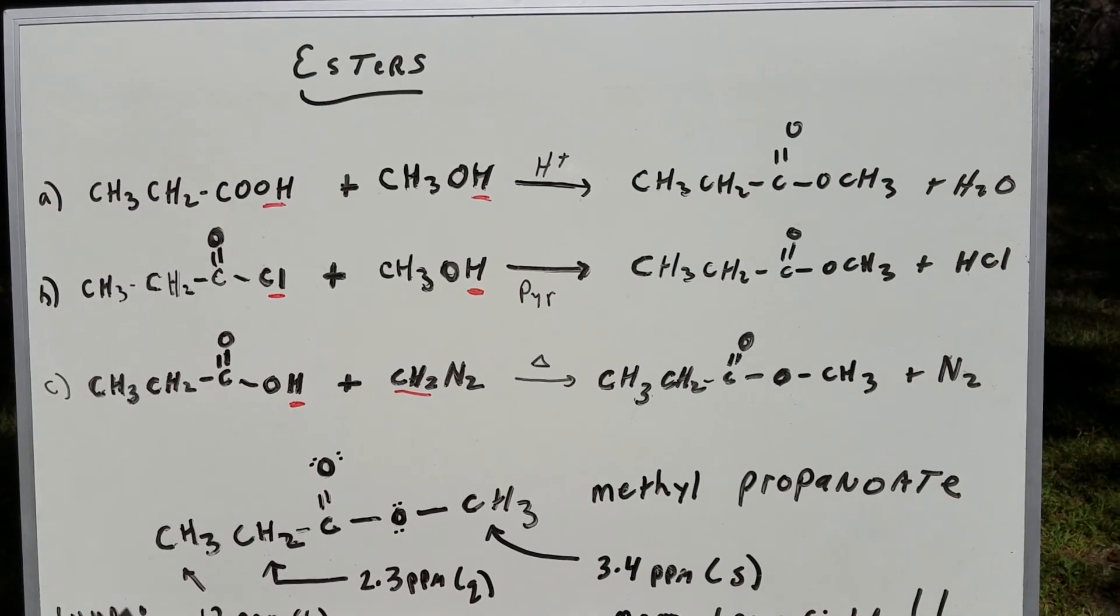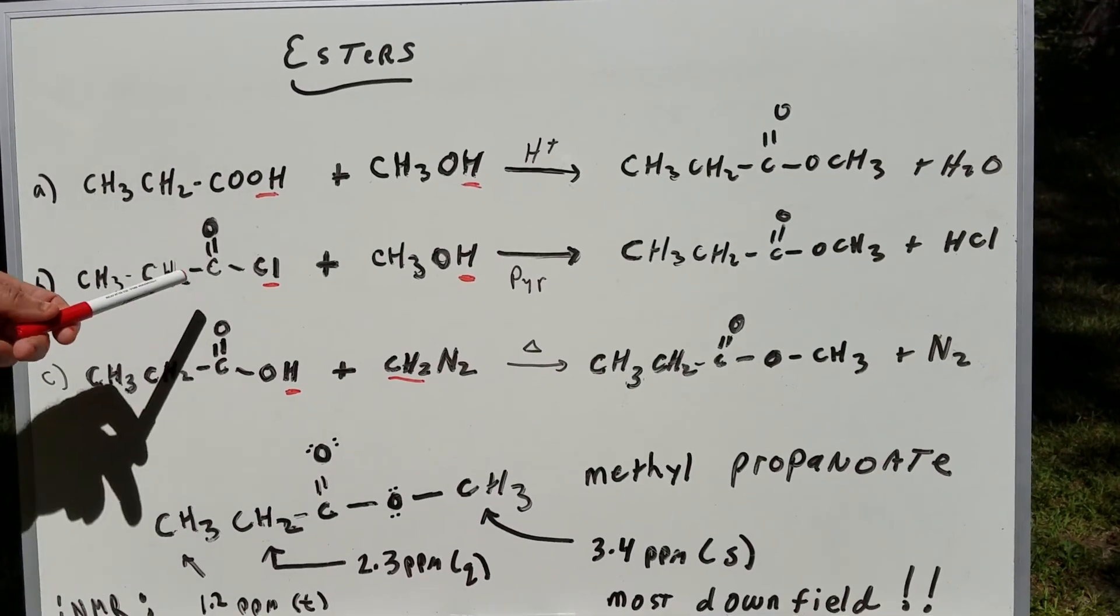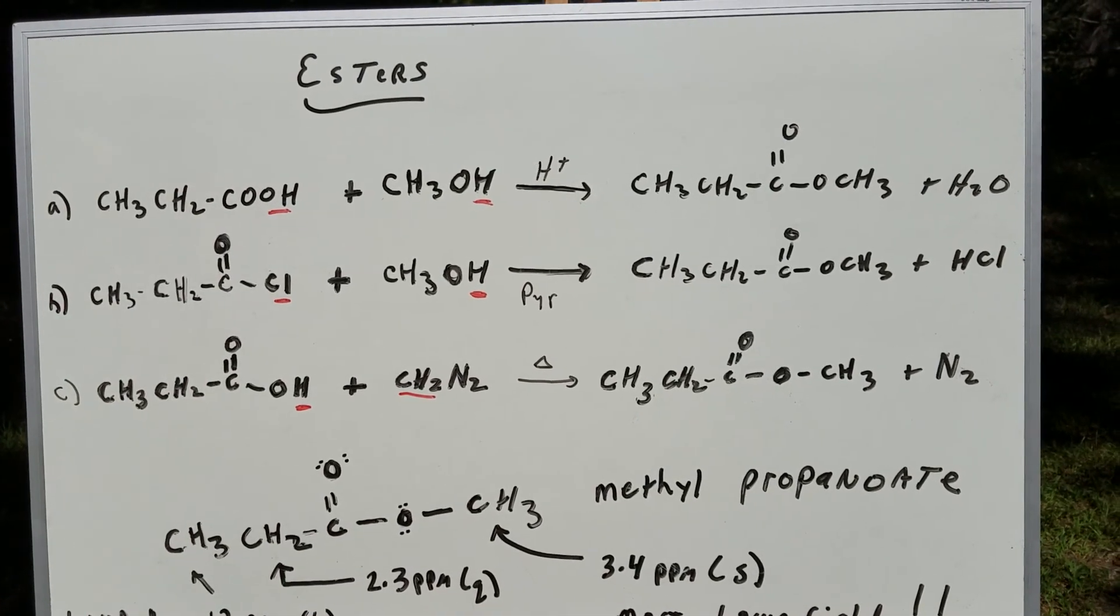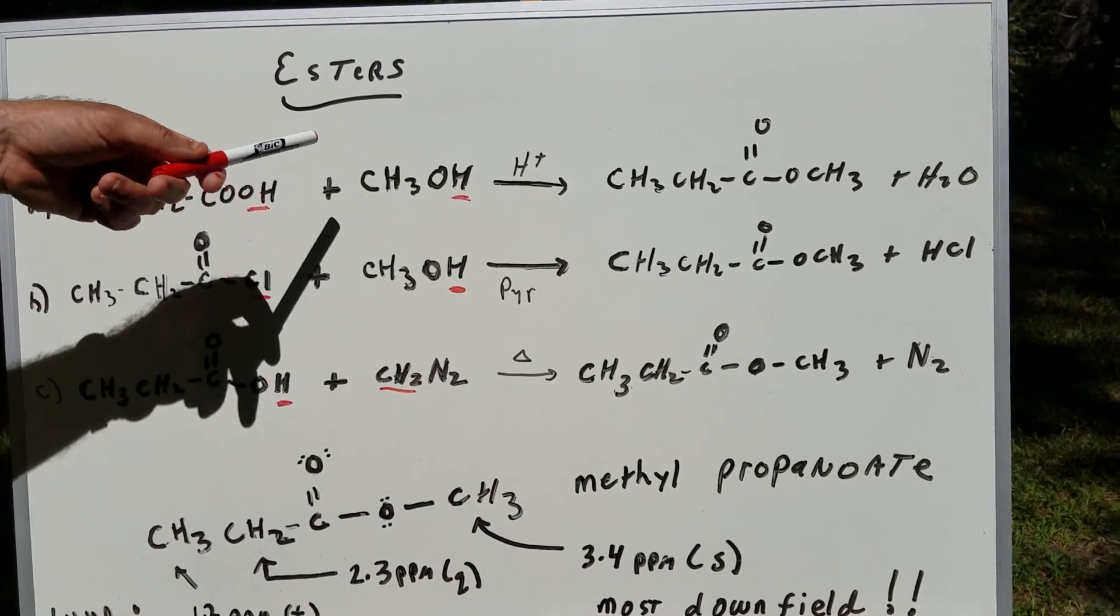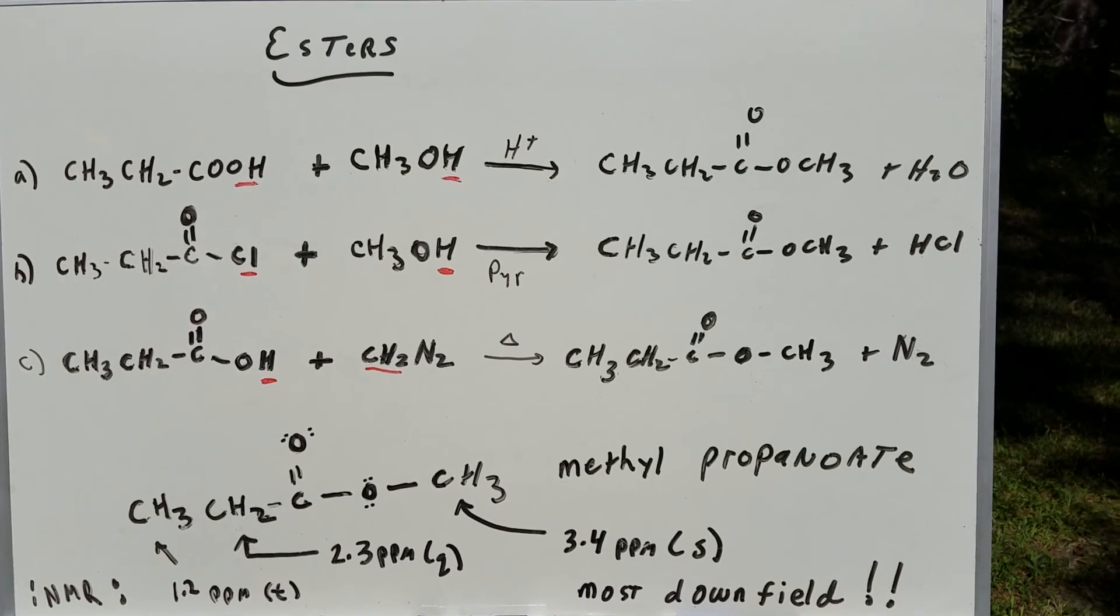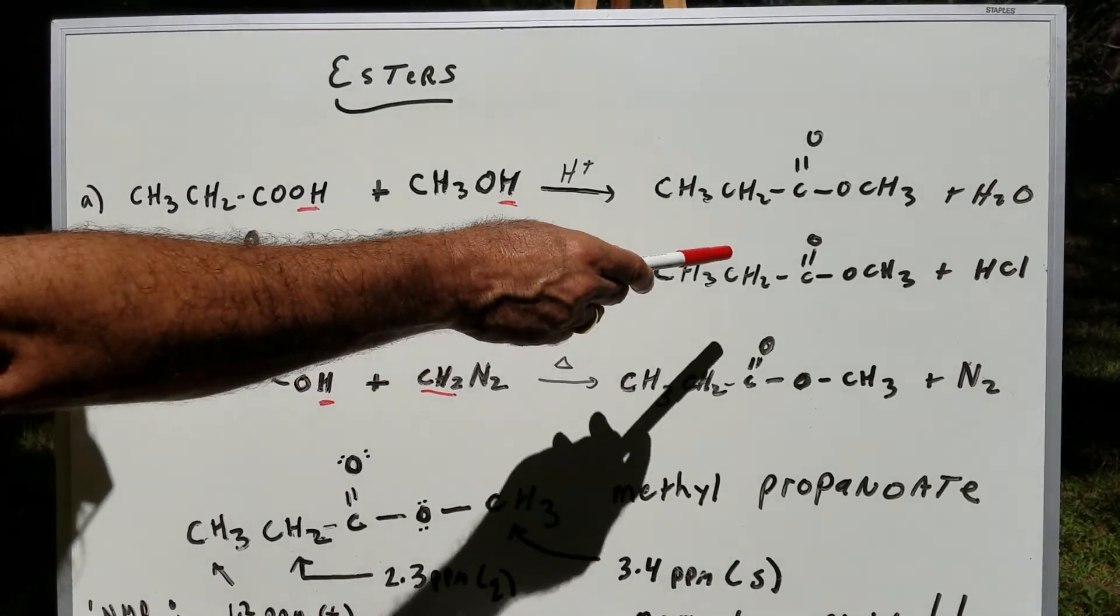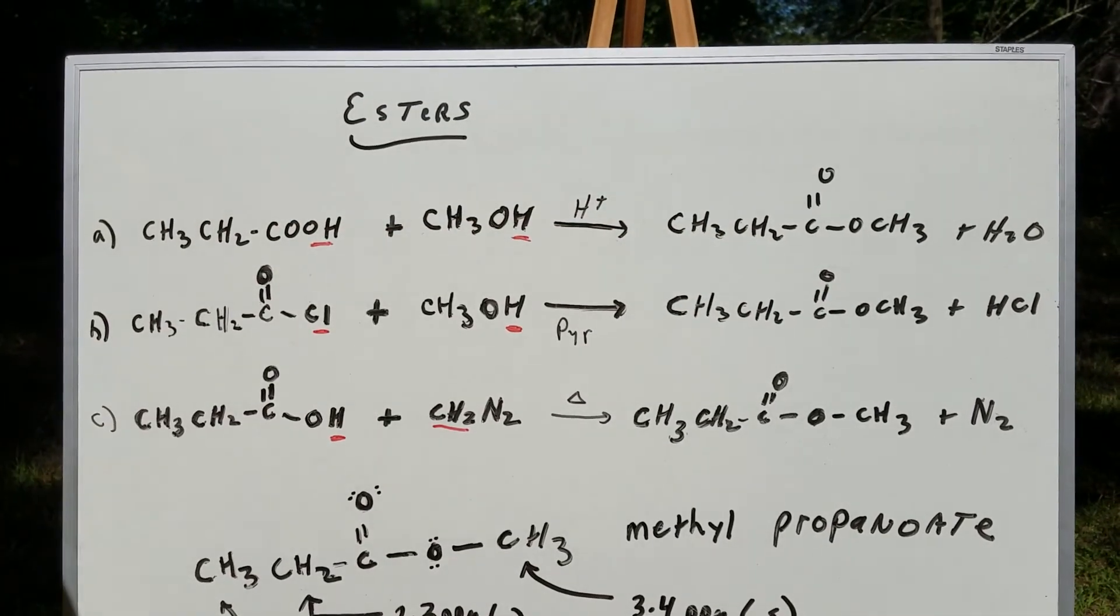Another way I can do it is to take an acyl halide, this being propanoyl chloride with methyl alcohol. Previously, we did methyl alcohol with propanoic acid. And I'm going to split off HCl. And I put the OCH3 on by releasing HCl. And once again, you make the same methyl ester.